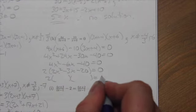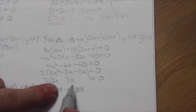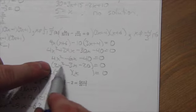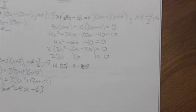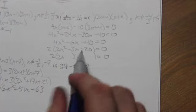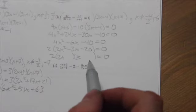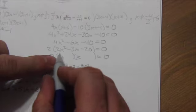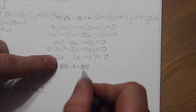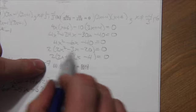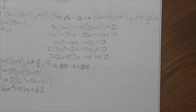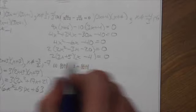Now I need to factor this quadratic. The first two terms have to break down into 2x and x — that's the only way to multiply to get 2x squared. I'm looking for factors of 20; 4 and 5 come to mind first. With 2x times negative 4 and positive 5, that gives negative 8 plus 5, which is negative 3. So the factored form works out correctly.